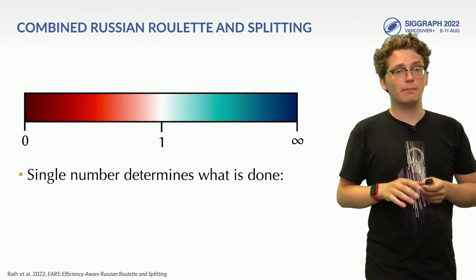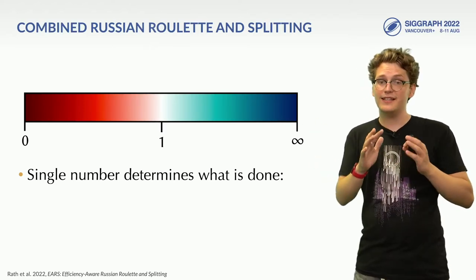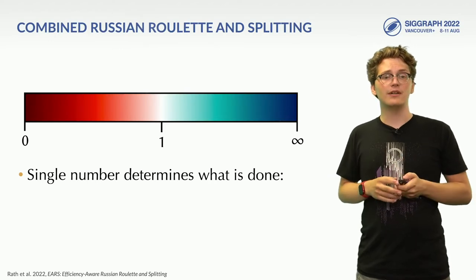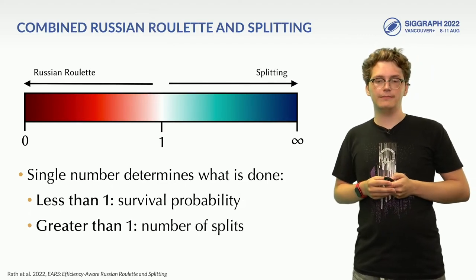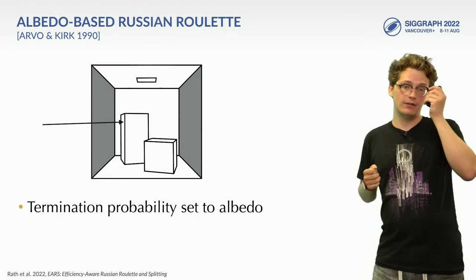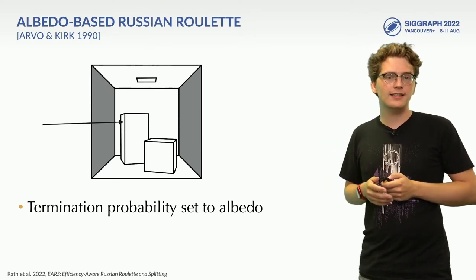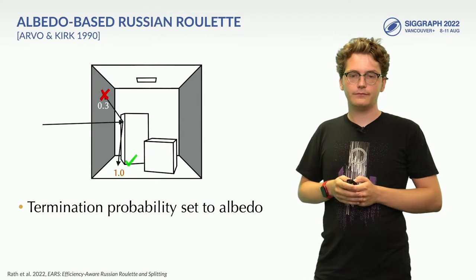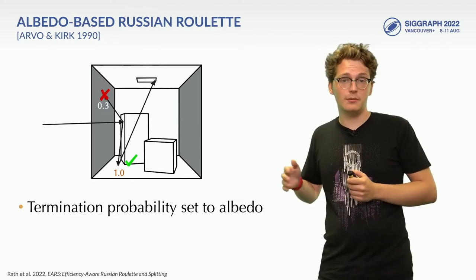Russian Roulette and splitting work best when they are combined. This way, the time saved by Russian Roulette from lower contributing regions can be invested by splitting to explore more promising areas. We will use the term splitting factor as a single number to refer to both Russian Roulette for values less than 1, as well as splitting for values above 1. Starting with the most popular approach known as albedo-based Russian Roulette, the survival probability is set to the surface albedo of the current intersection. This means that surfaces that are darker tend to have a higher termination chance than surfaces that are bright. Despite its simplicity, this method works surprisingly well in practice, as it can drastically reduce the time spent on low contributing paths.